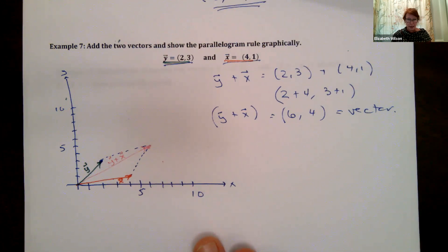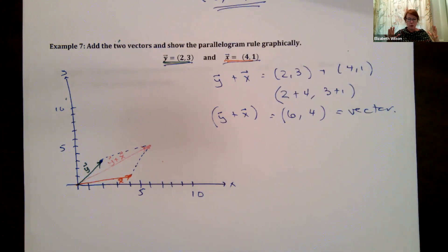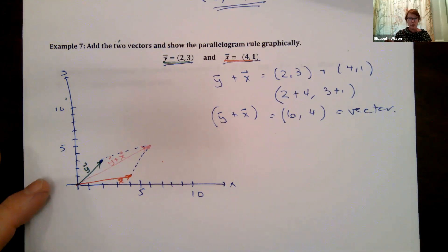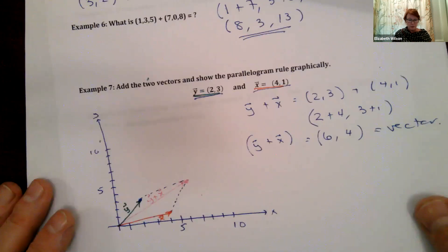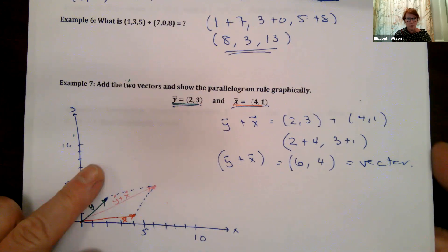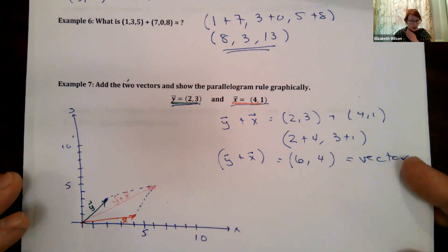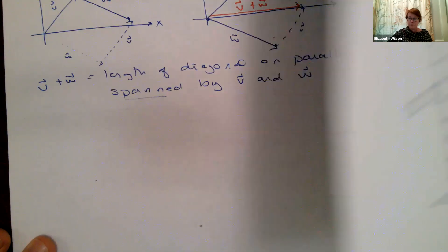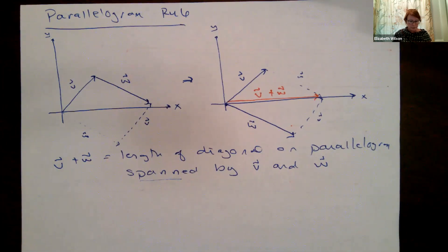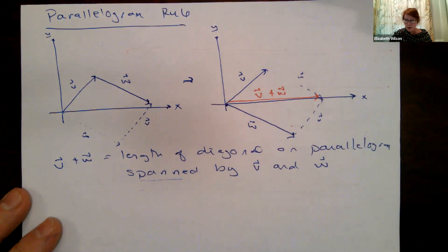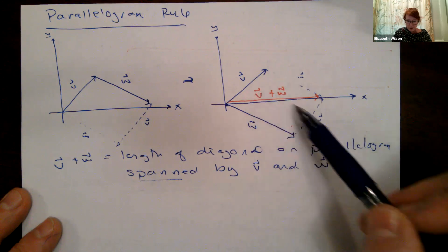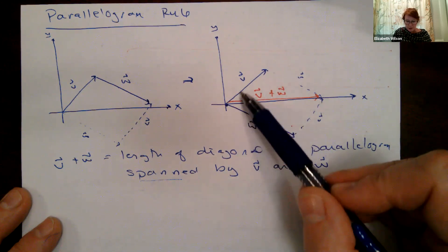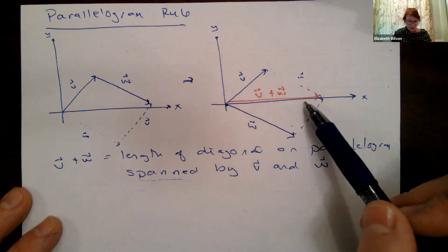So yesterday we were talking a lot about vocabulary — our dimensional space, one dimension, two dimensions, three dimensions — and then the difference between a point and a vector. We talked about vector addition and the parallelogram rule for adding vectors. The addition of v and w is the diagonal of that parallelogram. That's our parallelogram rule for vectors.